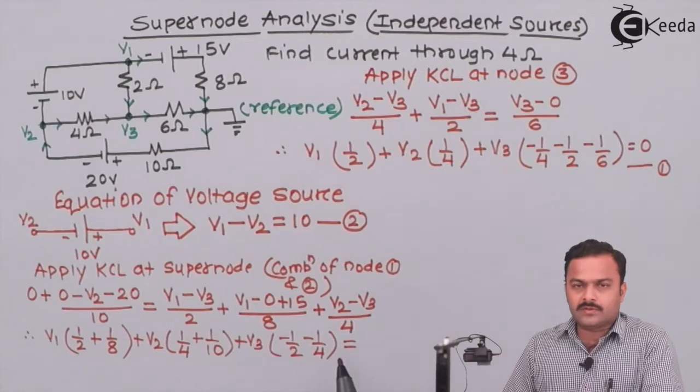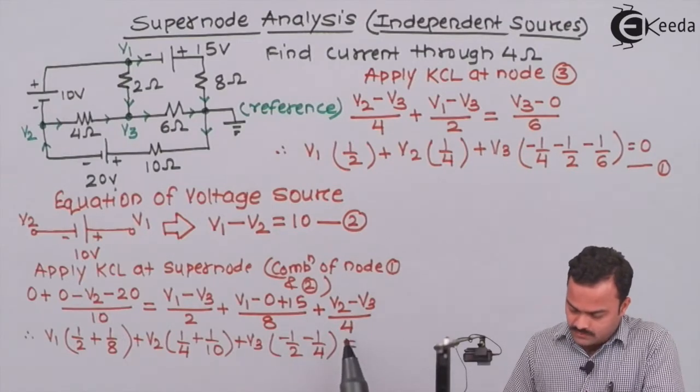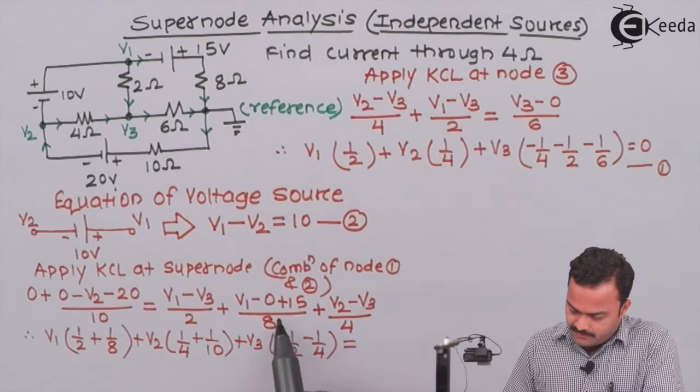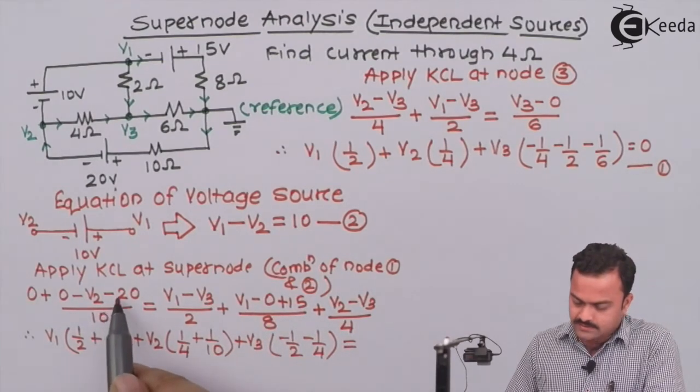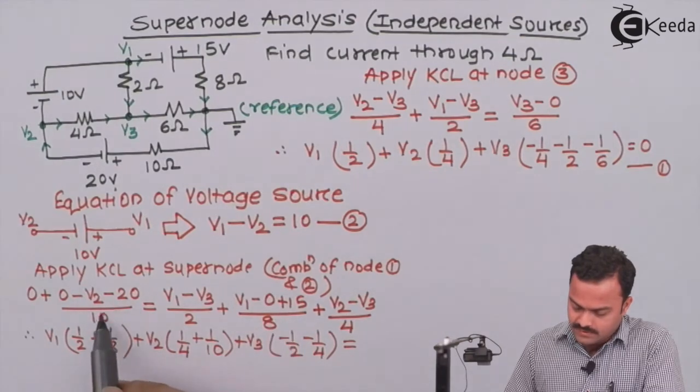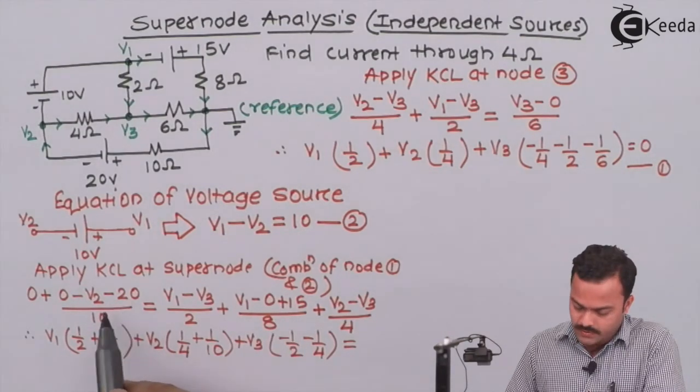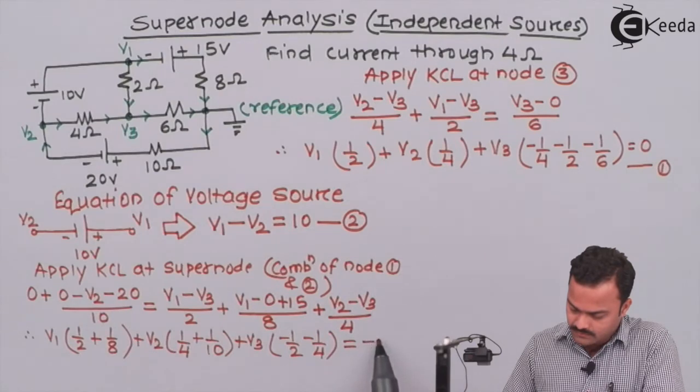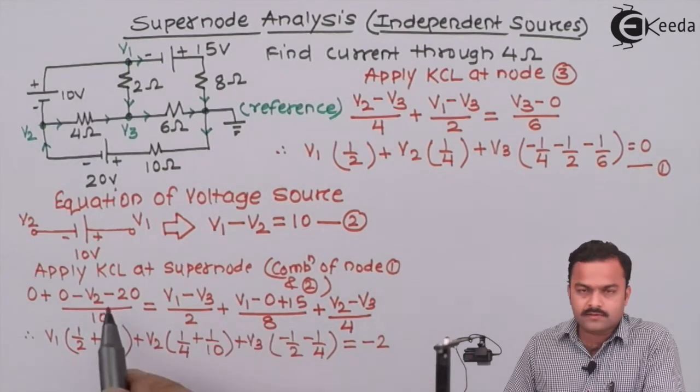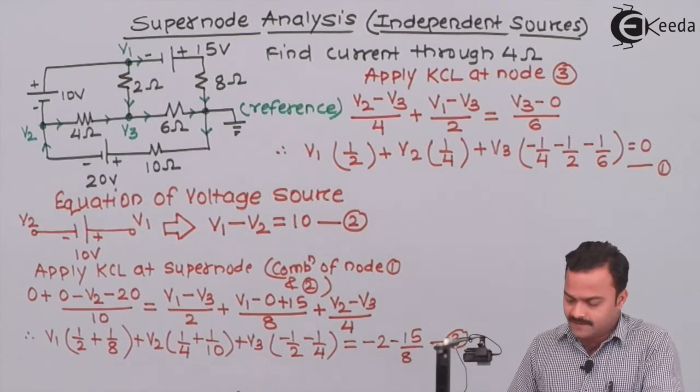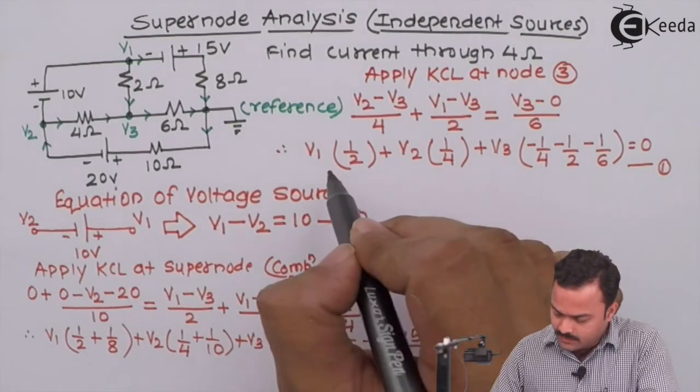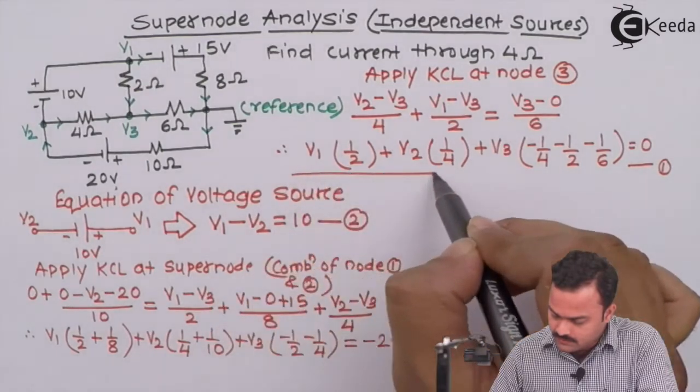And the right-hand side is all about the constant. So what we will do over here: 15 by 8 will go that side and that will add in negative sign with this minus 2. Minus 20 by 10 is minus 2, and this 15 by 8 will go that side, becomes minus 15 by 8, and this is equation number 3.